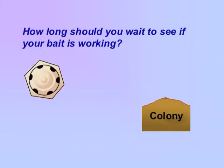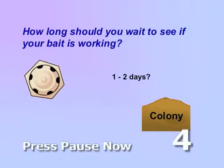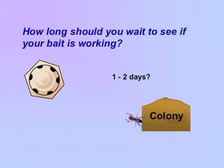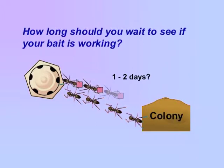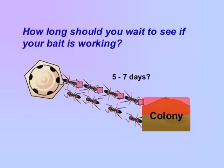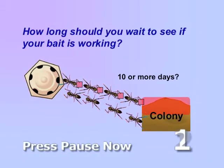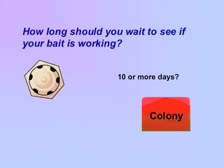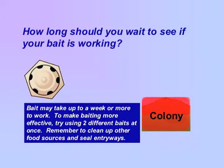How long should you wait to see if your bait is working? It may take one or two days for ants to find the bait and bring it back to the colony — it's too early to tell if your bait is working yet. After five to seven days, you will probably not see complete control yet, but if the ants are present they should be feeding on the bait. By ten days, you should be seeing a significant reduction in ants. Baits may take up to a week or even several weeks to work. To make baiting more effective, try using two different baits at once. Remember to clean up other food sources and seal entryways.